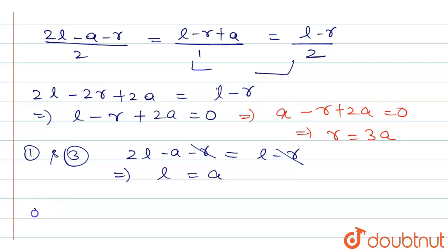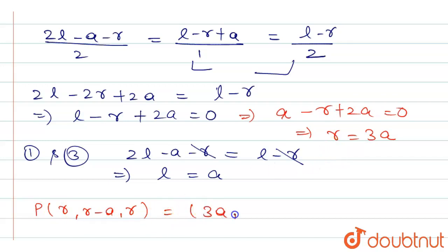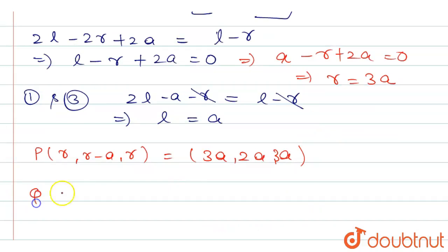Since point P equals (r, r − a, r), substituting r equals 3a gives P = (3a, 3a − a, 3a) = (3a, 2a, 3a). Similarly, the coordinate of Q is (2l − a, l, l).